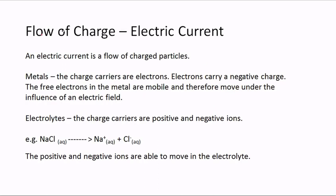What is an electric current? An electric current is a flow of charged particles. In a metal, the charge carriers are electrons — electrons carry a negative charge. The free electrons in the metal are mobile and therefore move under the influence of an electric field, so metals conduct electricity because they have free mobile electrons.